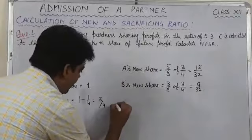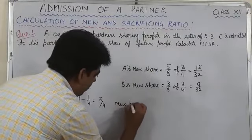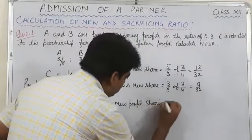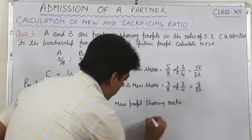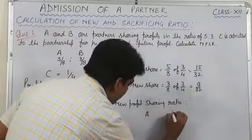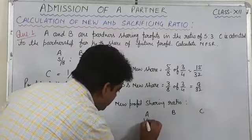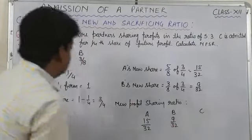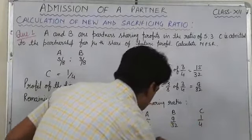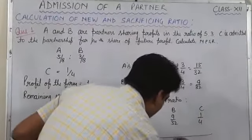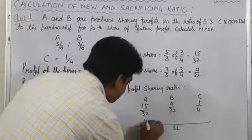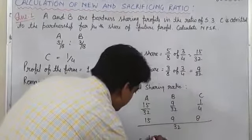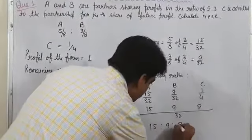Now we will rearrange and calculate new profit sharing ratio of all 3 partners A, B and C. A's new share is 15/32, B's new is 9/32, and C's share is 1/4. We will take LCM and LCM will come 32. 15 will come as it is, 9 will come as it is, 4 goes up so it will come 8. So their new profit sharing ratio will be 15:9:8.